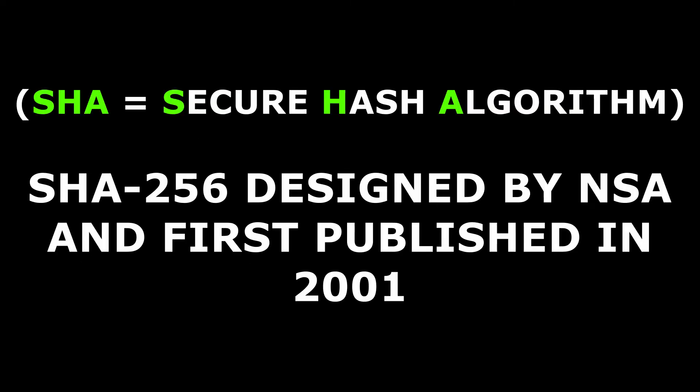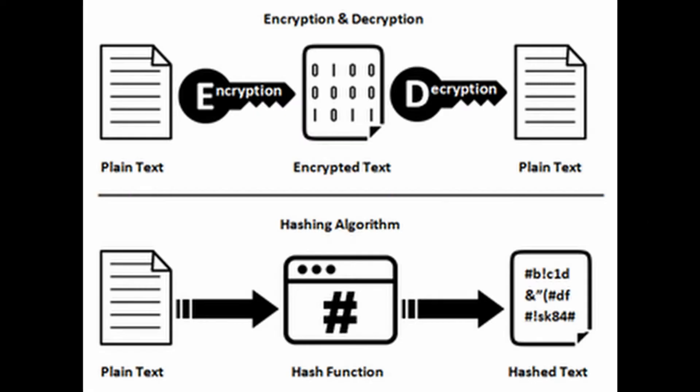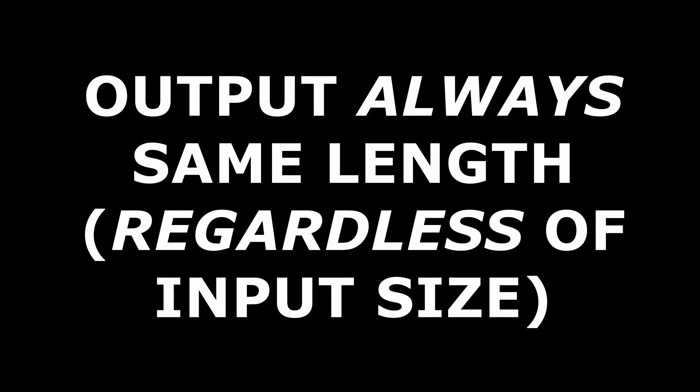First off, the SHA-256 algorithm, which stands for Secure Hash Algorithm 256, is a member of the SHA-2 cryptographic hash functions designed by the NSA and first published in 2001. SHA-256, like other hash functions, takes any input and produces an output, often called a hash, of fixed length. The output of a hashing algorithm such as SHA-256 will always be the same length, regardless of input size.